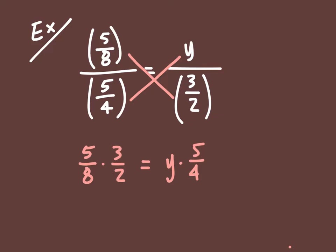Now, at this point, we've got a little bit of work to do. What we want to do is multiply these two fractions together here. So, remember, we want to multiply straight across. We're going to do 5 times 3, which is 15, 8 times 2, which is 16, and that's going to be equal to y times 5 fourths.